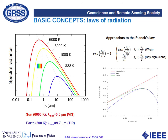Despite Planck's law providing the spectral distribution for any wavelength, different approximations are commonly used depending on the wavelength region. For short wavelengths, we can use the Wien approximation; for long wavelengths, we can use the Rayleigh-Jeans approximation, which is common when working with microwaves. In any case, Planck's law can describe the spectral distribution for any wavelength.